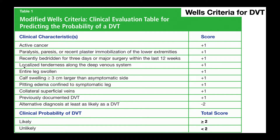Number four is localized tenderness along the deep venous system. This is something that can be palpated by the clinician and felt by the patient. The most common place for someone with a DVT to feel pain is on the backside of the lower leg — on the calf, on the proximal part, just distal to the knee. That's the most common place where people will feel pain with a deep vein thrombosis.